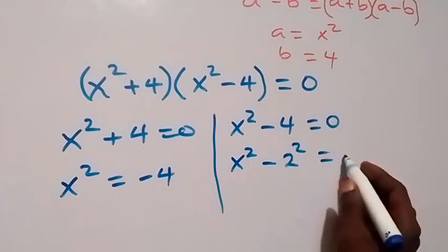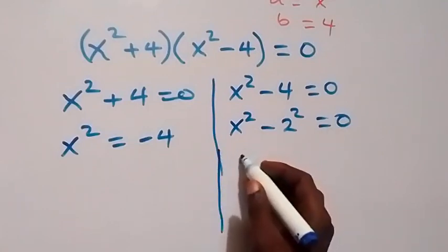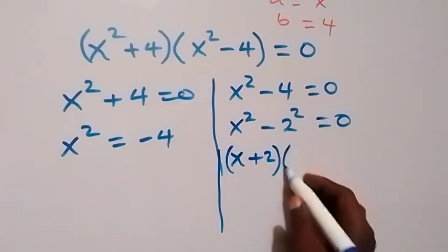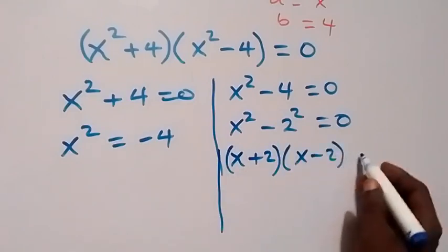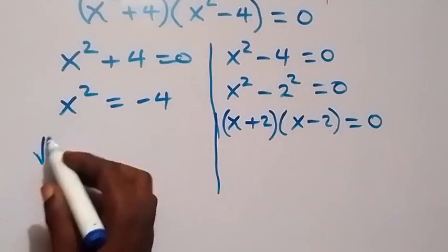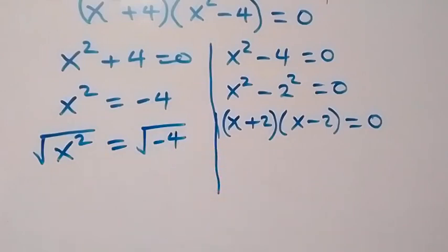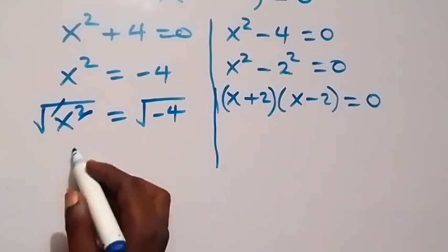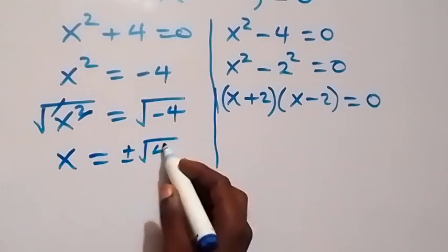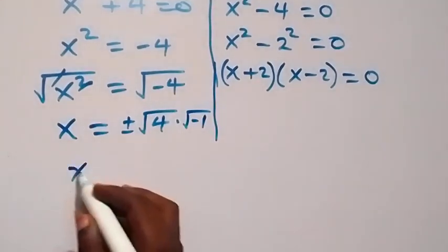On the other side we can write x squared minus 2 squared equals zero, which becomes x plus 2 times x minus 2 equals zero. For the first case, taking the square root of both sides: square root of x squared equals square root of negative 4. The square and square root cancel, giving x equals plus or minus the square root of 4 times the square root of negative 1.